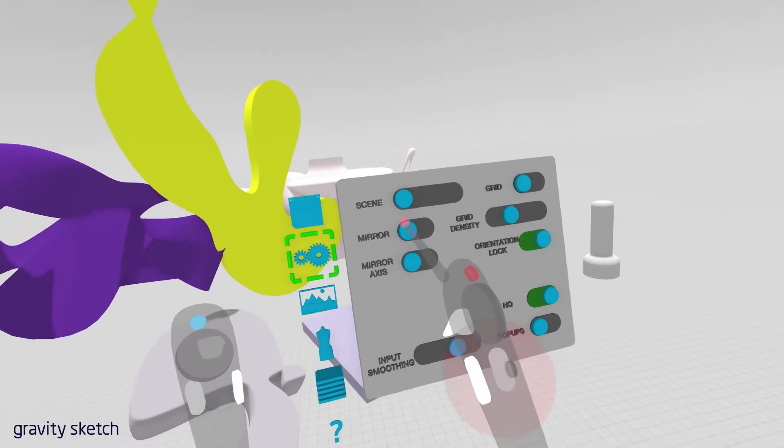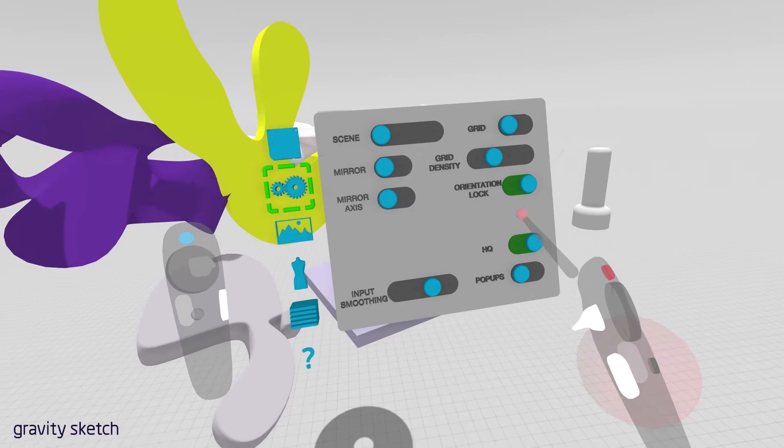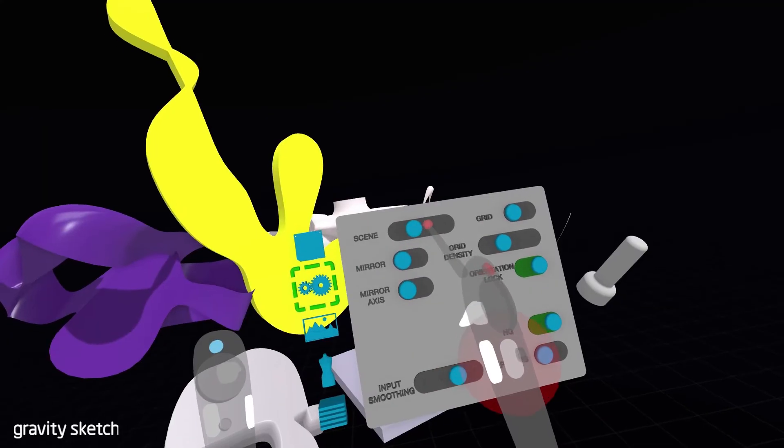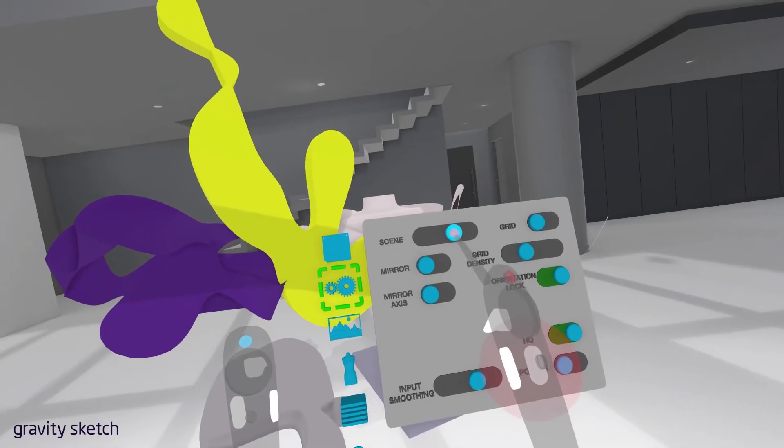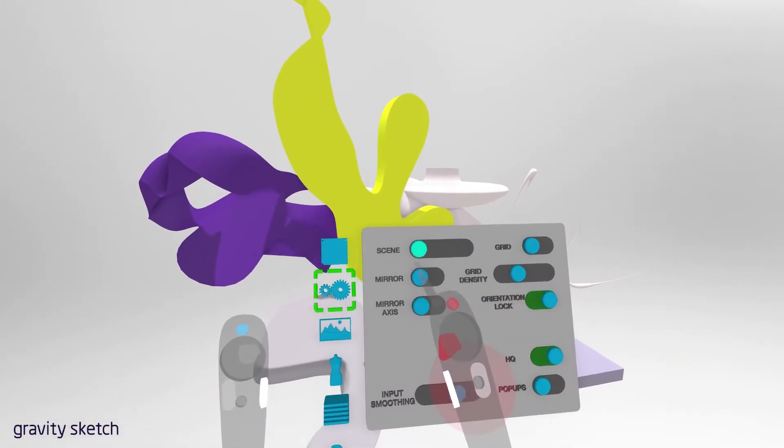You can also turn on a mirror, play with your grid, change the density of the grid, and hop into different scenes or different environments. So here we have a studio. And we have a high dynamic range room here. We'll go back to the beginning.